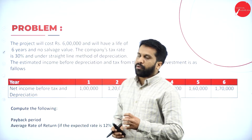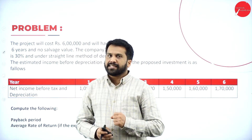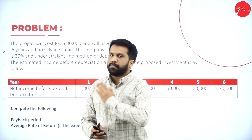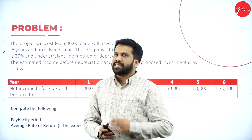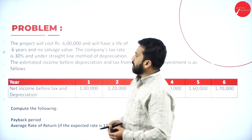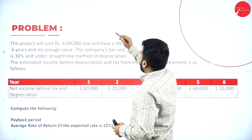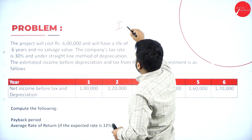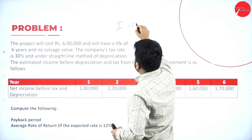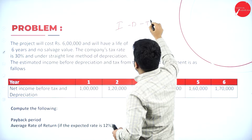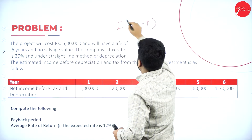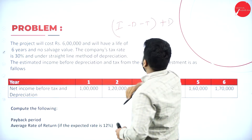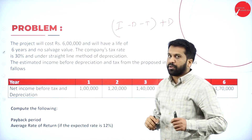In this, they have given income before depreciation and taxation, so we have to go from the beginning. Whatever income is there, you have to minus depreciation, minus taxation, then add back depreciation.